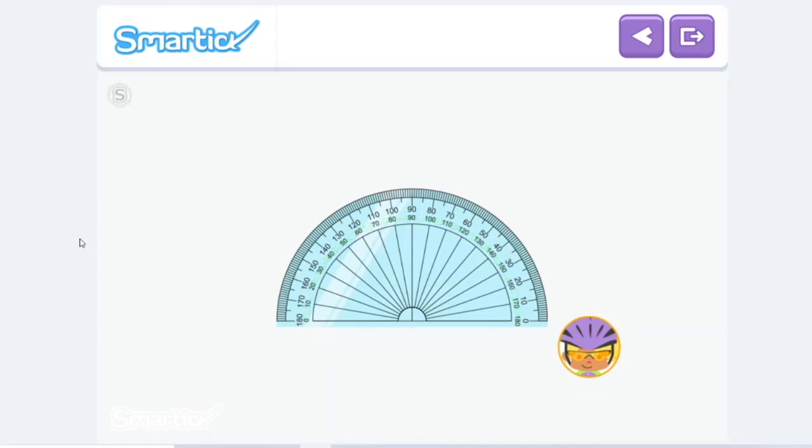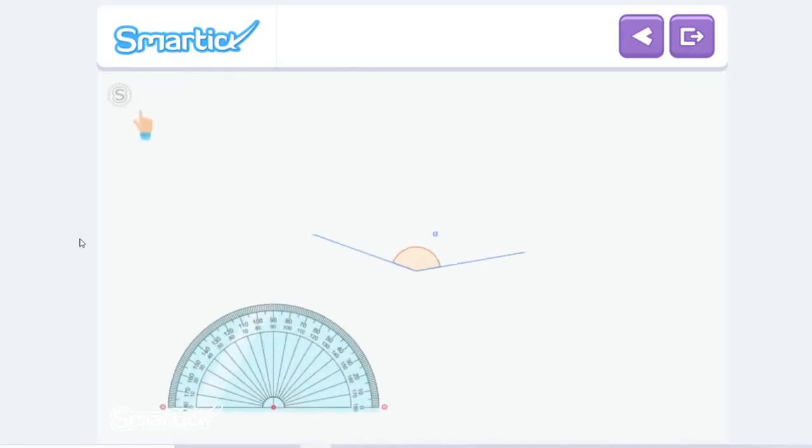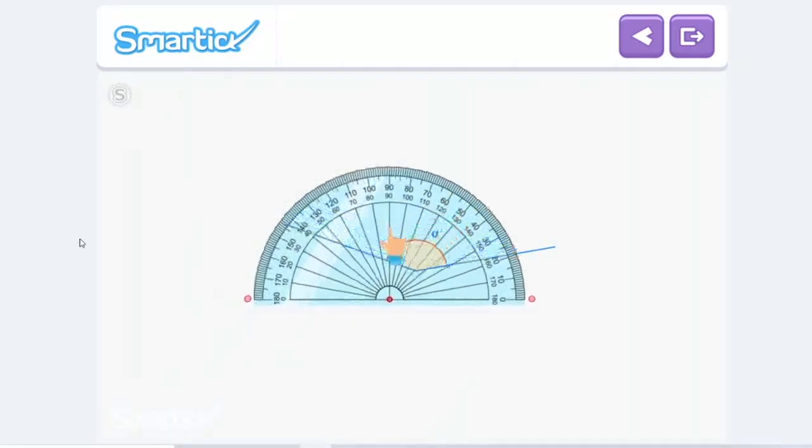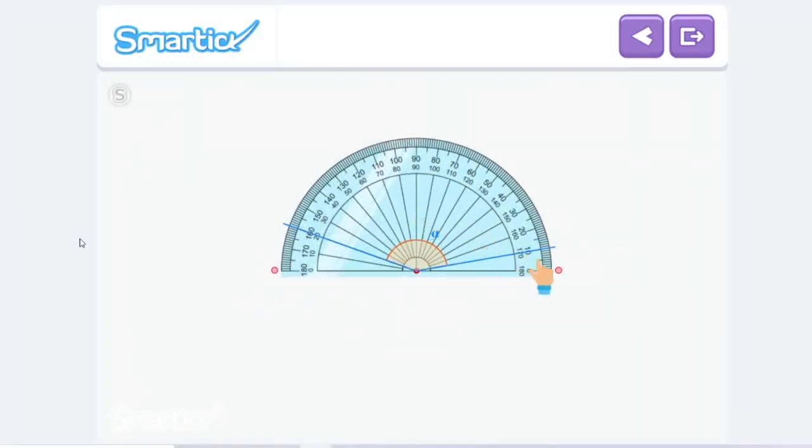To be able to measure the first angle, we need to have its vertex coincide with this point on the protractor, and then one of its sides on the horizontal axis of the protractor. For example, we are going to measure this angle counterclockwise. If we orient one side with this 0, the other side indicates the number of degrees the angle has. In this case, we need to use the outer scale.